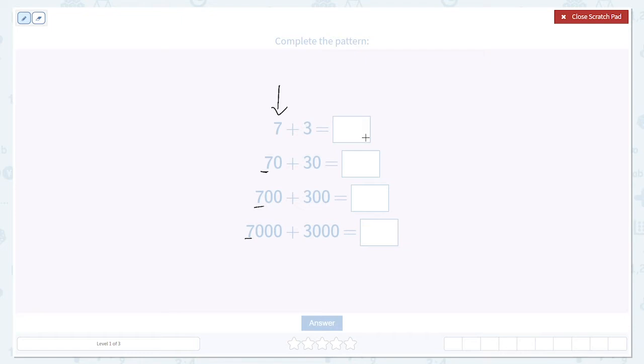The same thing is happening with the three. We start out with a three in the ones place, then the three in the tens place, the hundreds in 300, and finally the three is in the thousands place in 3000.